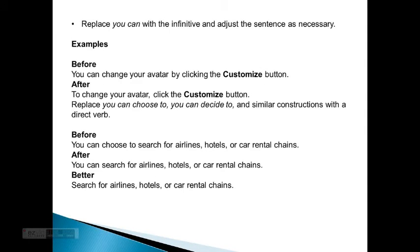Replace 'You Can' with the infinitive and adjust the sentence as necessary. Before: 'You can change your avatar by clicking the Customize button.' After: 'To change your avatar, click the Customize button.' Also replace 'you can choose to' and similar constructions with a direct verb. Before: 'You can choose to search for airlines, hotels, or car rental chains.' After: 'You can search for airlines, hotels, or car rental chains.' Even better: 'Search for airlines, hotels, or car rental chains.'